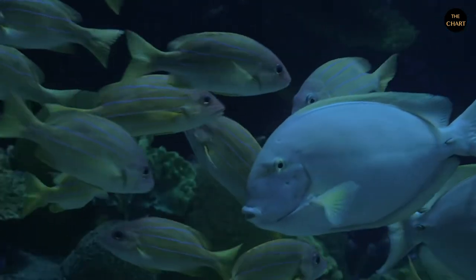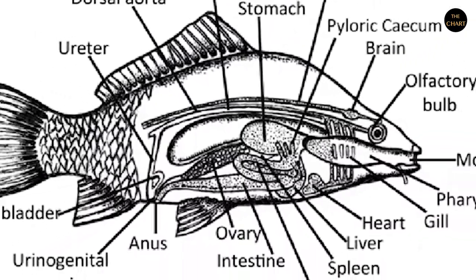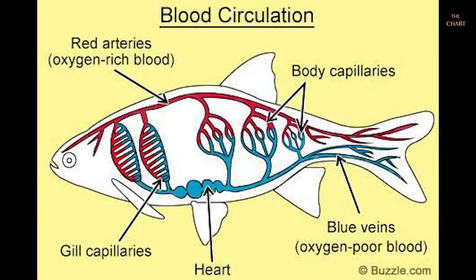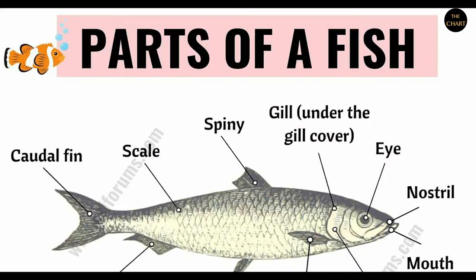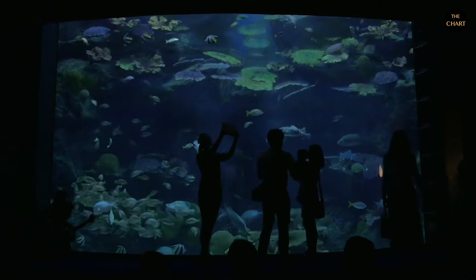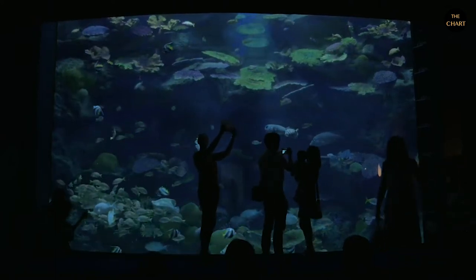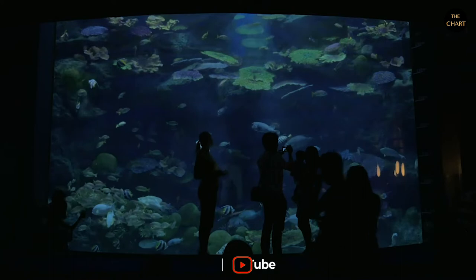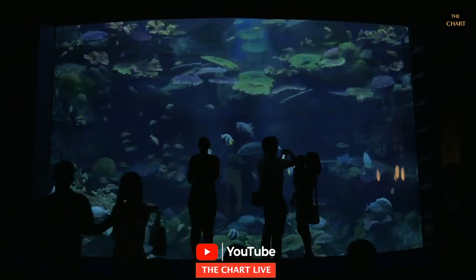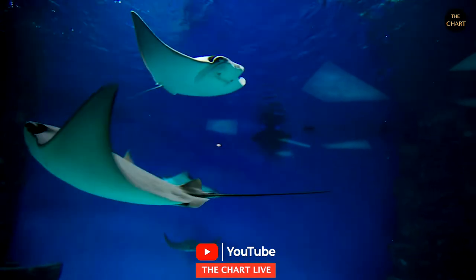Fish have a closed-loop circulatory system. The heart pumps the blood in a single loop throughout the body. In most fish, the heart consists of four parts, including two chambers and an entrance and exit. Fish ingest food through the mouth and break it down in the esophagus, and can eat a wide variety of food including plants and other organisms.